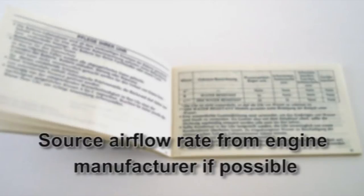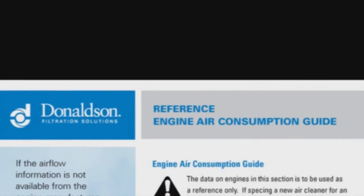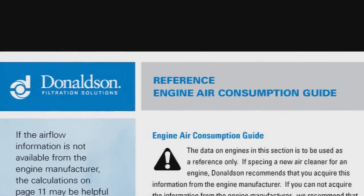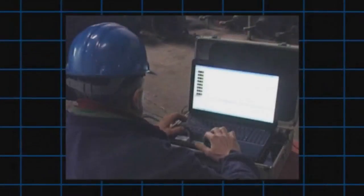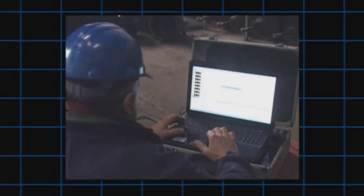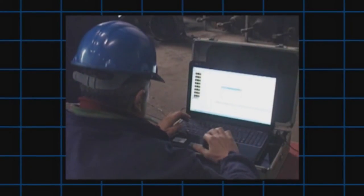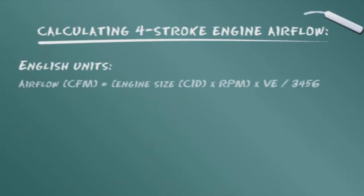Sourcing your engine airflow requirements from the engine manufacturer is the recommended method. If that is not available, look up your engine in the Engine Airflow Guide in the Donaldson Engine Intake Systems Catalog. There are some situations, however, where it may be necessary to calculate your engine's airflow requirements using the formula method. For those situations, this is the preferred formula for calculating engine airflow.